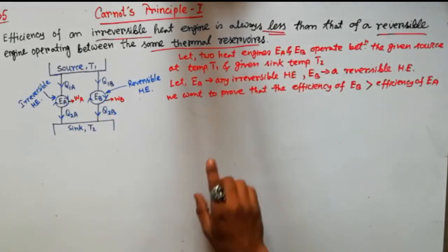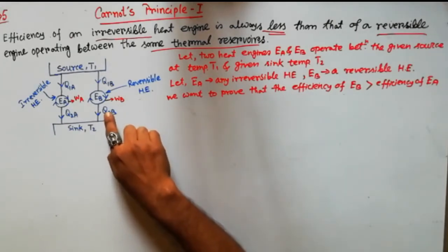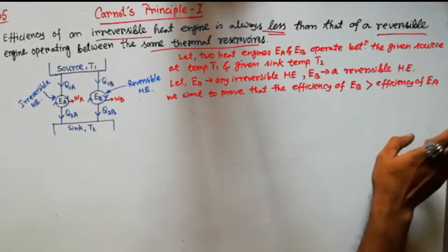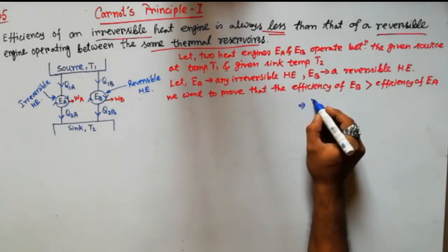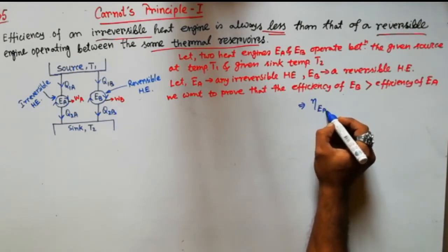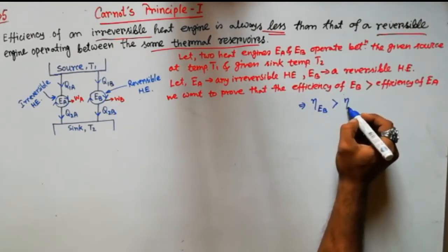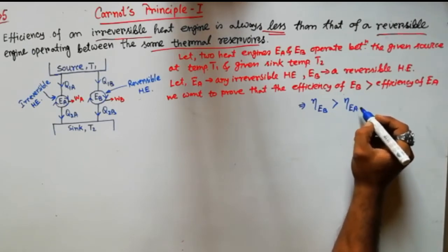Now, if we want to prove that the efficiency of Eb, the reversible engine, is greater than the efficiency of Ea, the irreversible engine — that is what we want to prove: η_Eb > η_Ea.